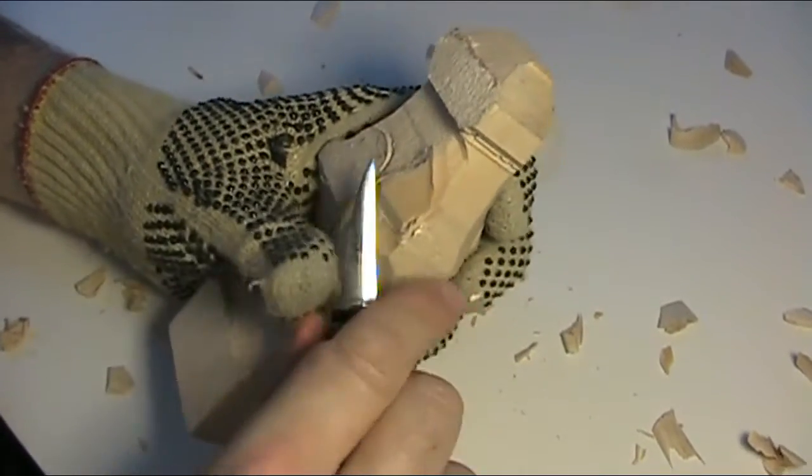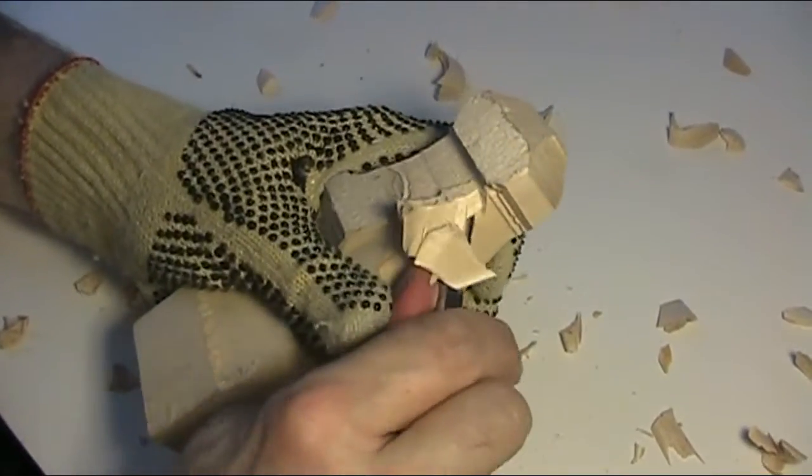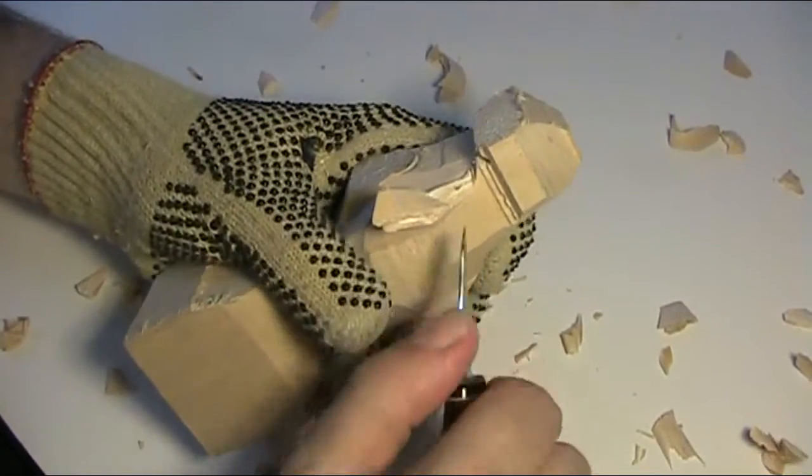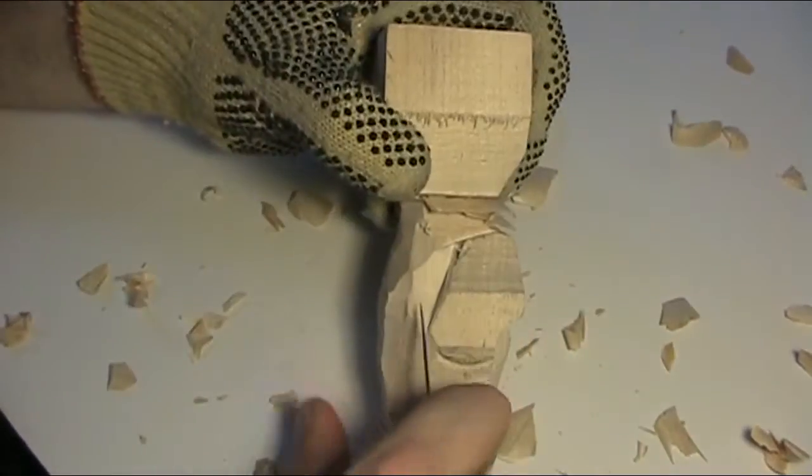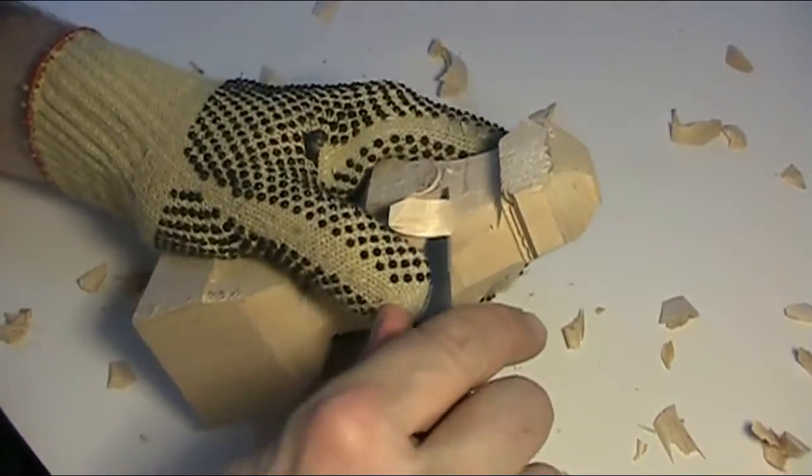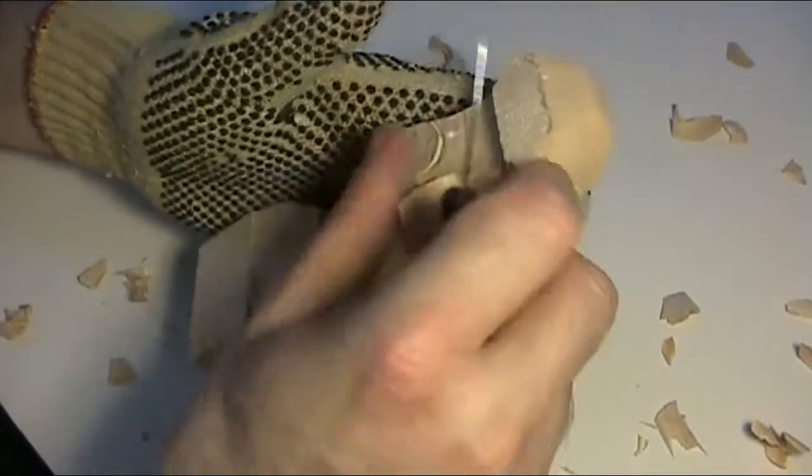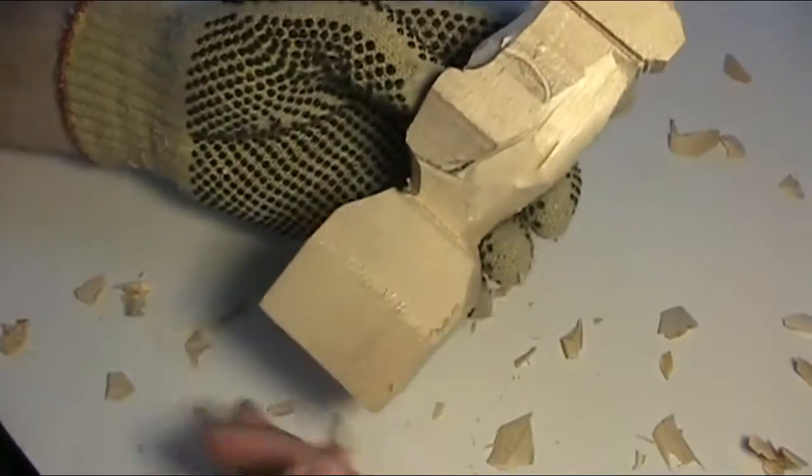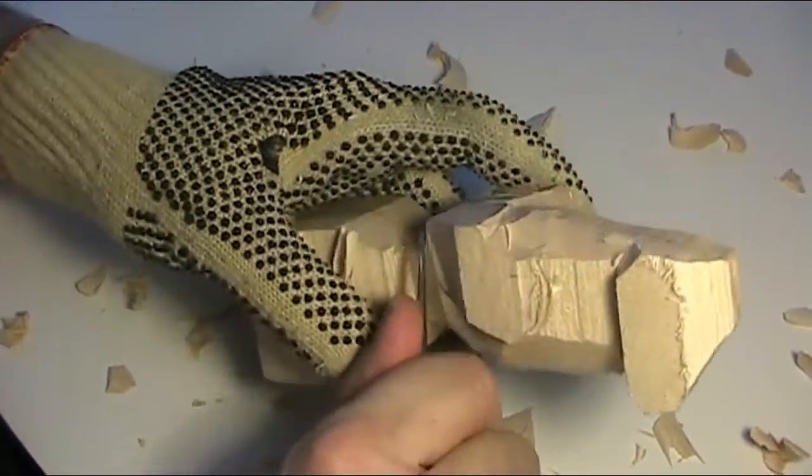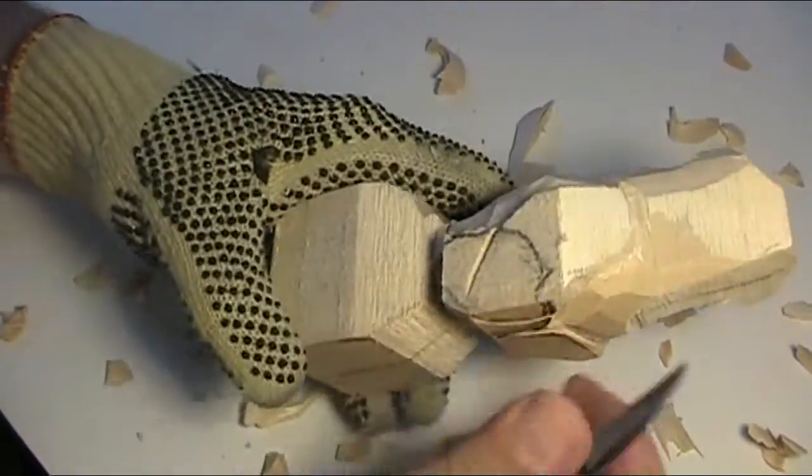Oops, kind of went with the grain there and almost lost a chunk that I probably shouldn't have taken off. And again we're just blocking this out. I'll just take the knife marks off there just to keep things rolling. That's about as far as I want to go.